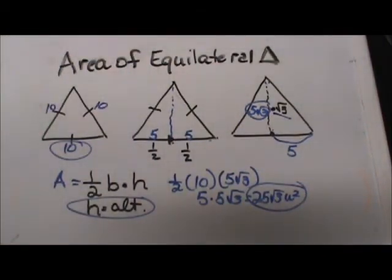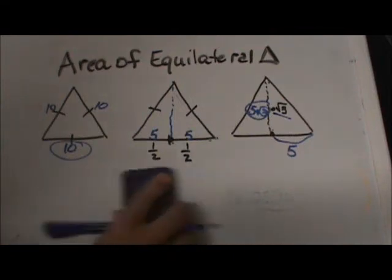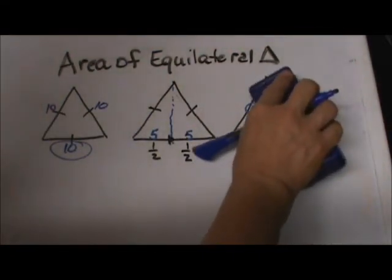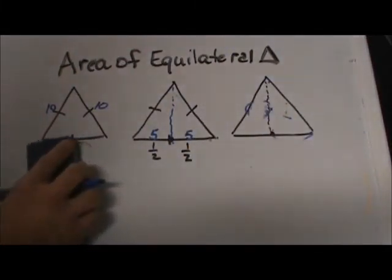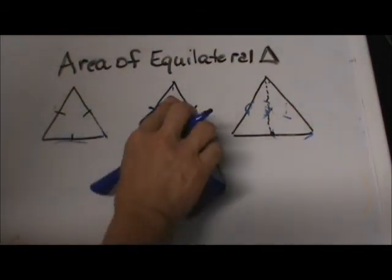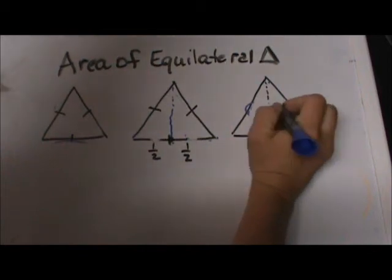And that is how you find the area of an equilateral triangle. Now let's look at one a little bit differently, same patterns, but let's say this time you are given the altitude and you have to work backwards to figure out the side. So I am going to erase all this. And this time I am going to give you the altitude. The altitude is going to be, let's just say it is 6.